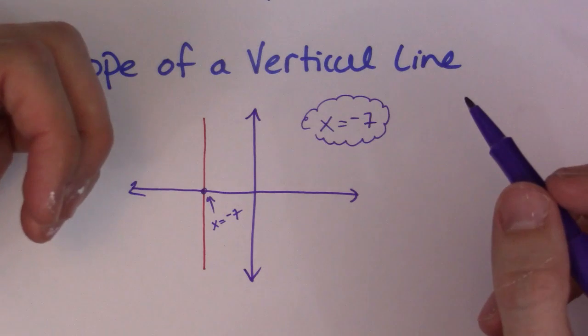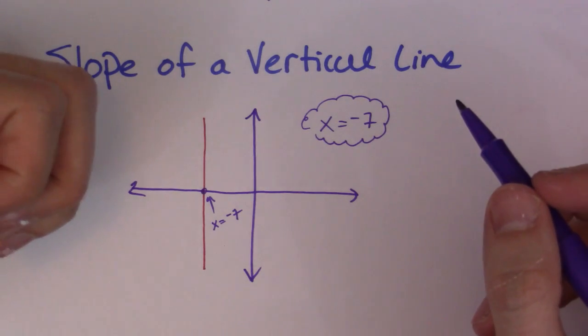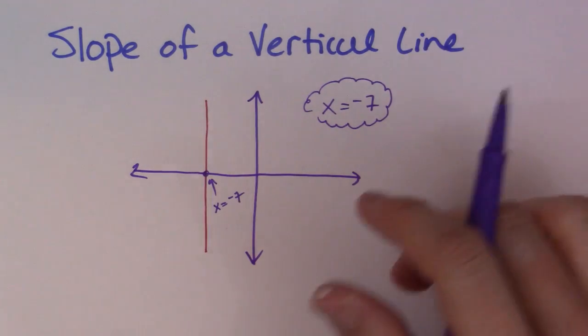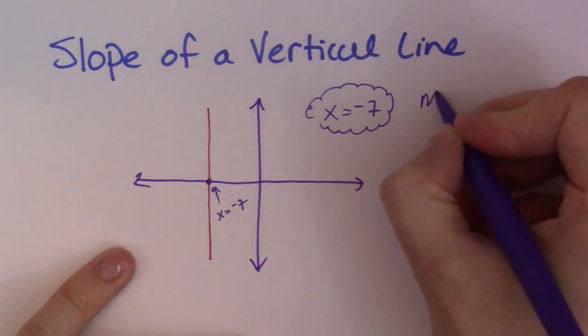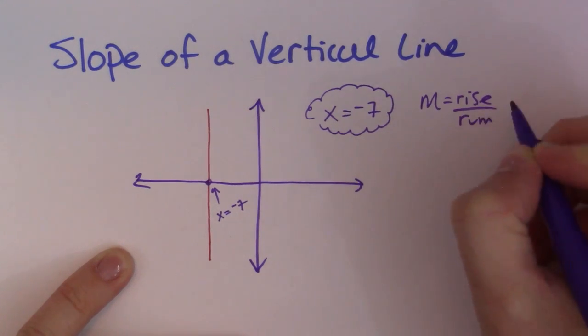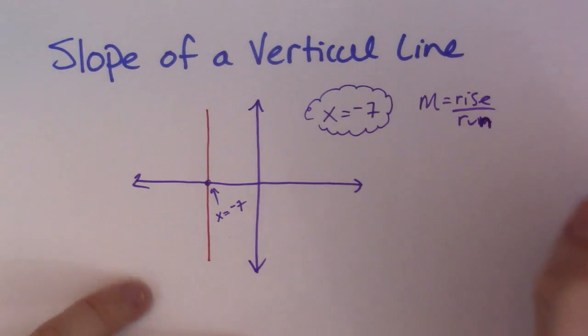So this one is a little bit more complicated to understand. So let me give you an example. Slope is rise over the run, right? So not rise over the rum. Rise over the run.